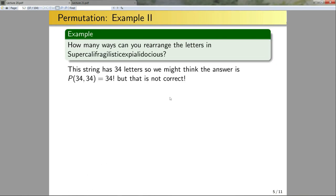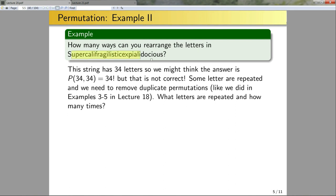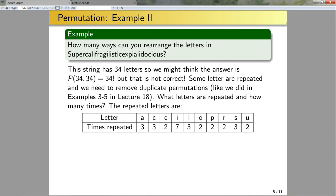Some letters are repeated, and we need to remove these duplicate permutations. This is similar to the approach used in examples three and five of lecture 18. I need to know what letters are repeated and how many times. Using Python, the repeated letters are A, C, E, I, L, O, P, R, S, and U, along with how many times each appears.